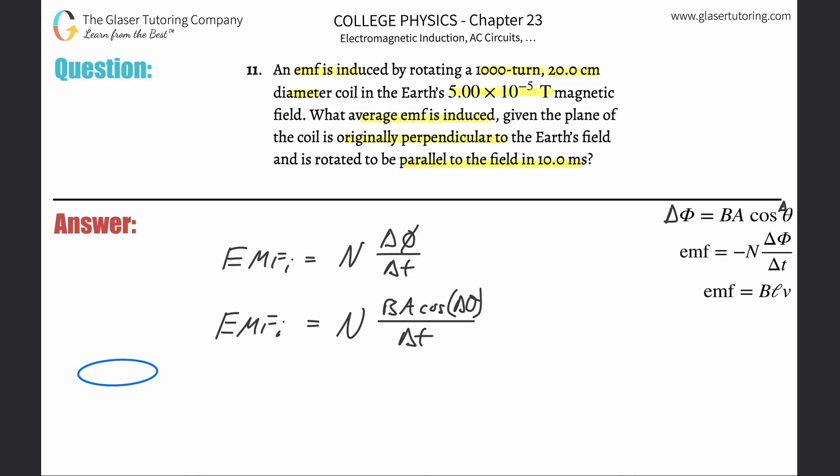So then the plane of the coil, so the plane is horizontal here, it's flat, and they're telling us that the plane of that coil is then perpendicular to now the magnetic field.